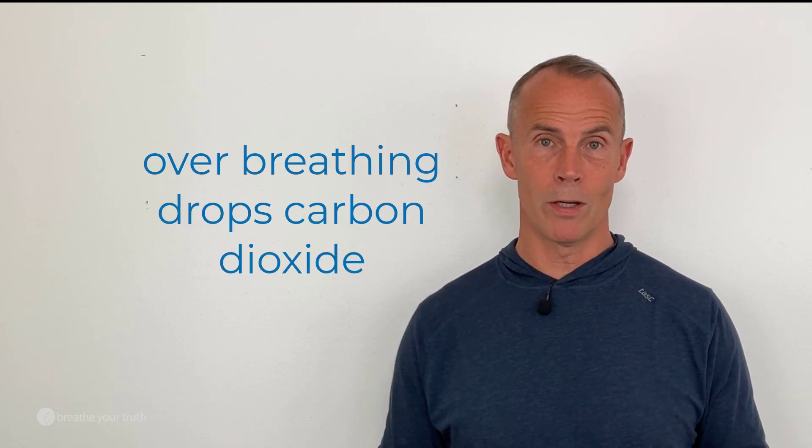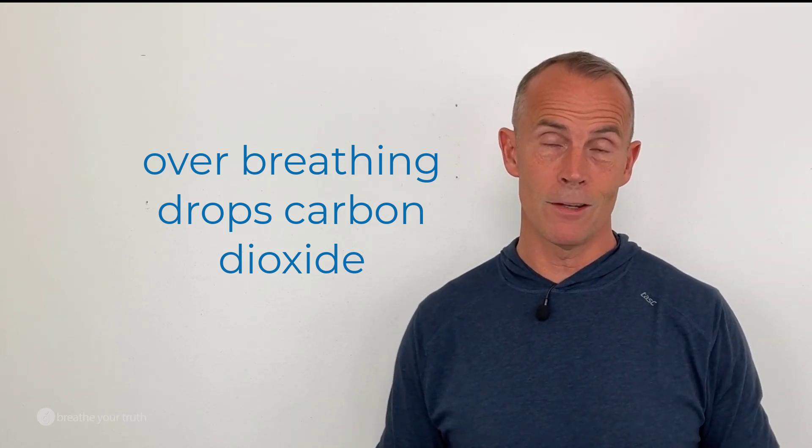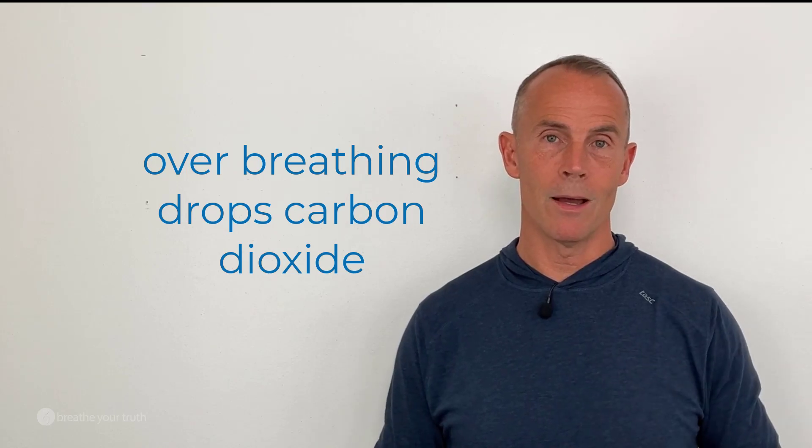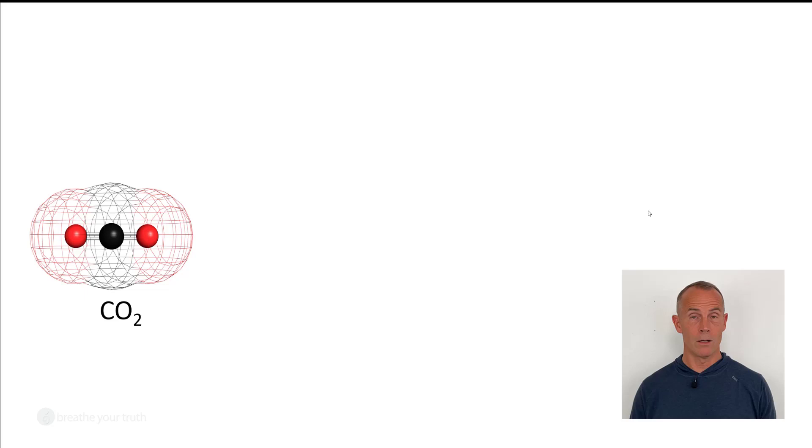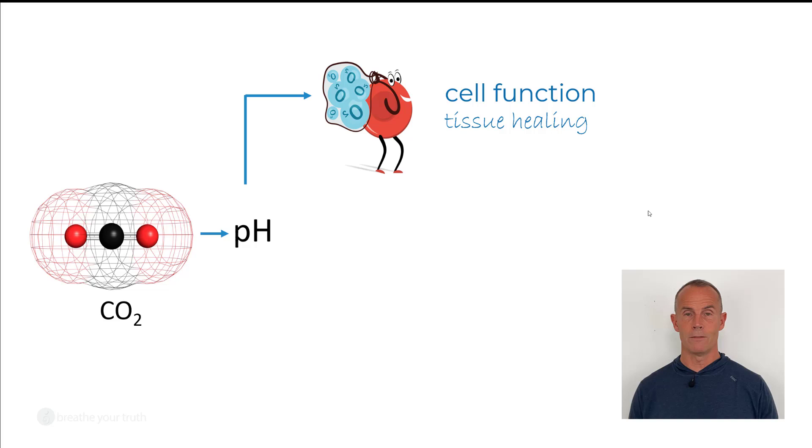When we over-breathe, when we breathe too much, oxygen stays pretty stable, but we drop carbon dioxide. Carbon dioxide is the primary driver of the pH of the blood. In other words, the acid-base balance of the blood has everything to do with cell function. And the reason is, when the acid-base balance of the blood changes, oxygen's ability to get out of the blood changes. Another way to put that is, if we breathe too much, hemoglobin binds oxygen too strongly and it struggles to get out. So the cells actually become oxygen deprived, even though there's a ton of oxygen in the system. And even though you're breathing a bunch, all of a sudden the cells can't get access to that oxygen.